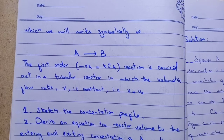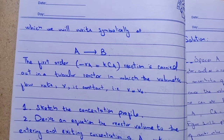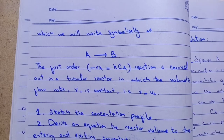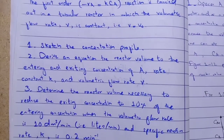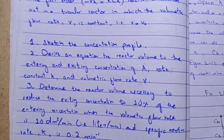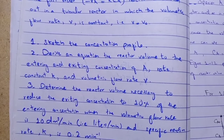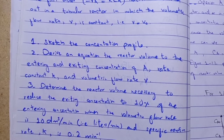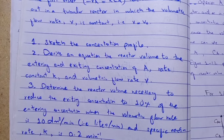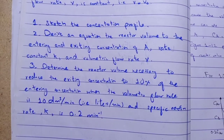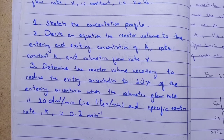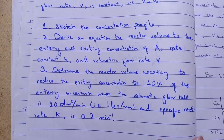The volumetric flow rate V is constant throughout the process, meaning V equals V naught. We need to: (1) sketch the concentration profile, (2) derive an equation relating the reactor volume to entering and exiting concentration of A, rate constant K, and volumetric flow rate V, and (3) determine the reactor volume necessary to reduce the exiting concentration to 10% of the entering concentration, when volumetric flow rate is 10 dm³/min and specific reaction rate K is 0.23 per minute.